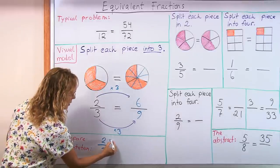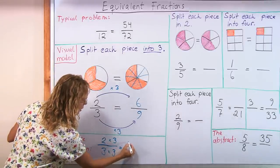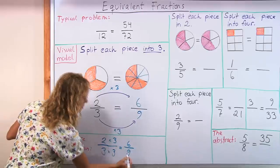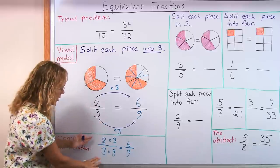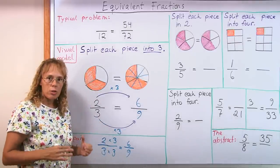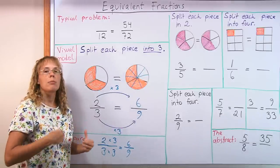People write the times 3 right there. Then they get 6/9. But I like this better, at least for starters, because students can confuse it with multiplying the whole fraction times 3.